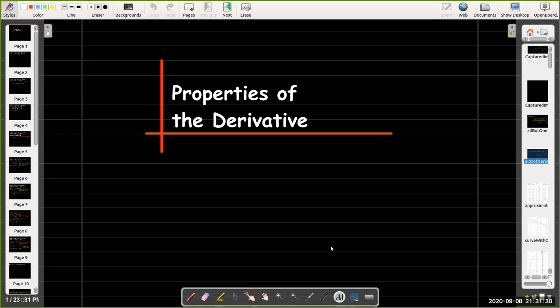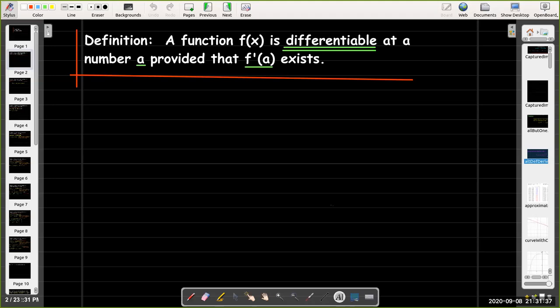In this short video, we're going to discuss some of the properties of the derivative. We have a new term, differentiable. What does differentiable mean? We say a function f(x) is differentiable at a number a, provided that f'(a) exists. In other words, f(x) is differentiable at a, provided that a belongs to the domain of f'(x).